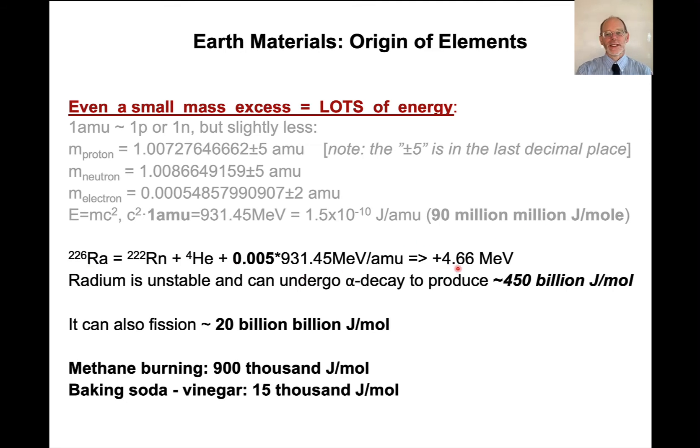And so this particular reaction, we can figure this out, it produces 4.66 mega electron volts. And that means that this decay of radium 226 to form radon 222 produces about 450 billion joules per mole. That's a lot. It's even more if it fissions. Of course, you can fission some isotopes. If it fissions, it would produce about, what is that, 20 times 10 to the 18th joules.